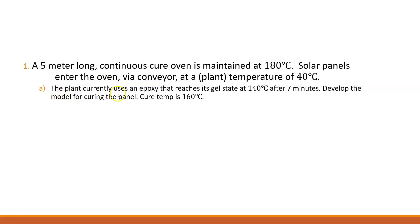Number one, the plant uses one epoxy that reaches its gel state at 140 degrees C after seven minutes. Develop the model for curing the panel. Now, when it's cure temperature, that transition point is 160 degrees. So it actually reaches the gel state at seven minutes. And then at some other amount of time, it actually reaches 160 degrees when it's actually finished. That's when it reaches its final cure. Now, what speed should the conveyor be set, meters per minute, in order for the curing process to be complete just before it exits? So in other words, you want it to just reach its solidification, just hit 160 degrees, and then start to leave. You don't want it standing there much longer than that.